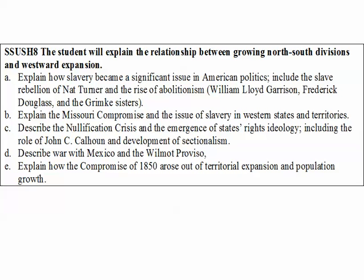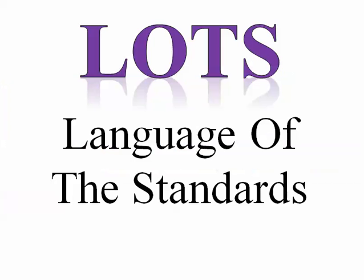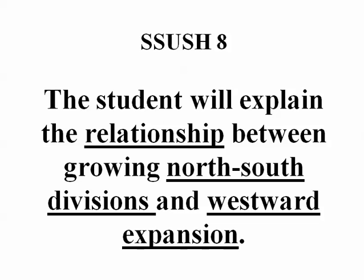Let's start with Standard 8. We have five substandards — A, B, C, D, E — and we need to tie all these in to look at what are the North-South divisions, or sectionalism, and what events caused our country to rip apart. The overall focus is that you as a student would be able to explain the relationship between growing North-South divisions — also called North-South tensions or sectionalism — and Westward Expansion, and then tie these two together.